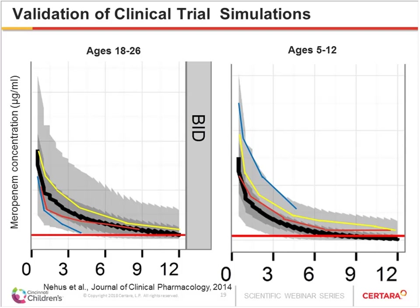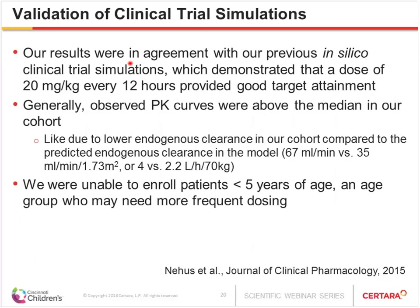When we compared the PK analysis to our trial simulations, the results showed our simulations were valid. Superimposing six observed curves on the predicted distributions showed that all curves fell within the distributions predicted by the clinical trial simulator. However, they tended toward the upper half of the distribution, likely because our cohort had lower endogenous clearance — 35 mL per min per 1.73 m² — compared to the adult data value of 67 mL per min per 1.73 m² used in simulations.